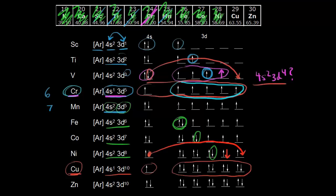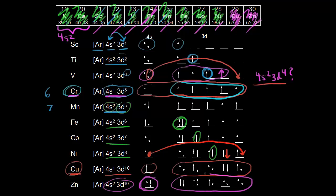Finally, zinc. Adding one more electron after copper gives [Ar] 4s² 3d¹⁰ — both the 4s and 3d orbitals are now completely filled. This is a pretty complicated topic overall, and hopefully this gives you a good idea of what's going on with d orbital electron configurations across the first row of transition metals.